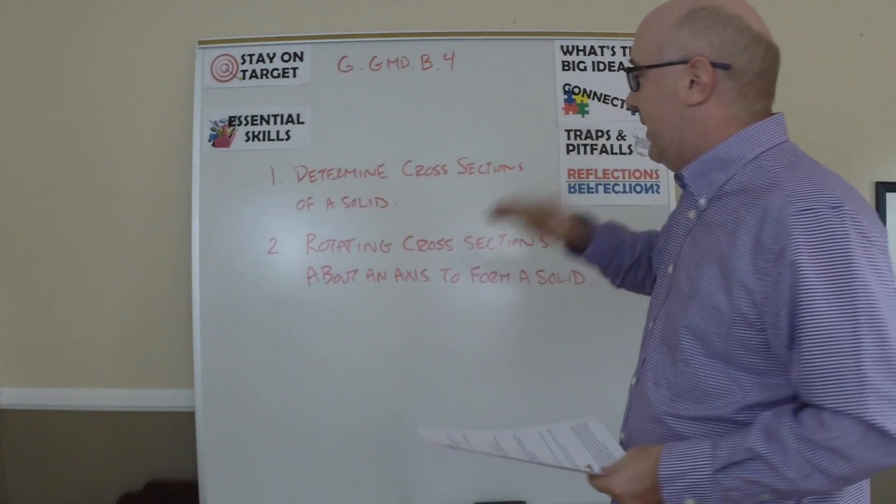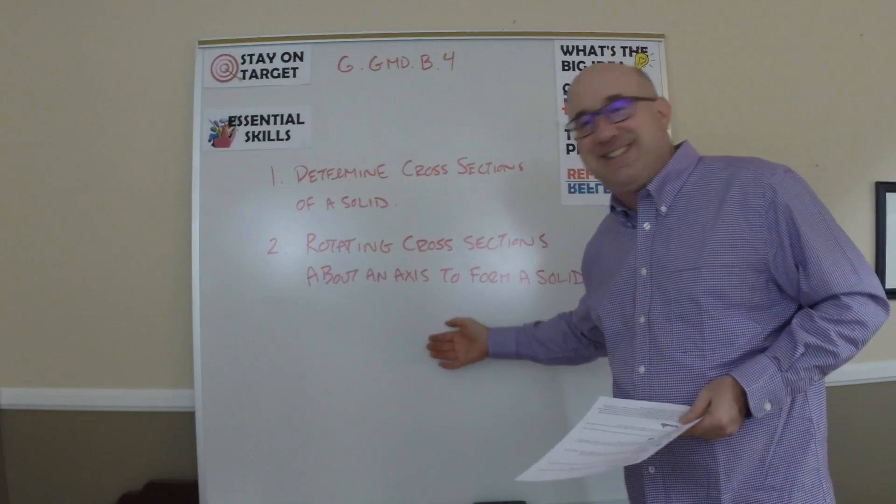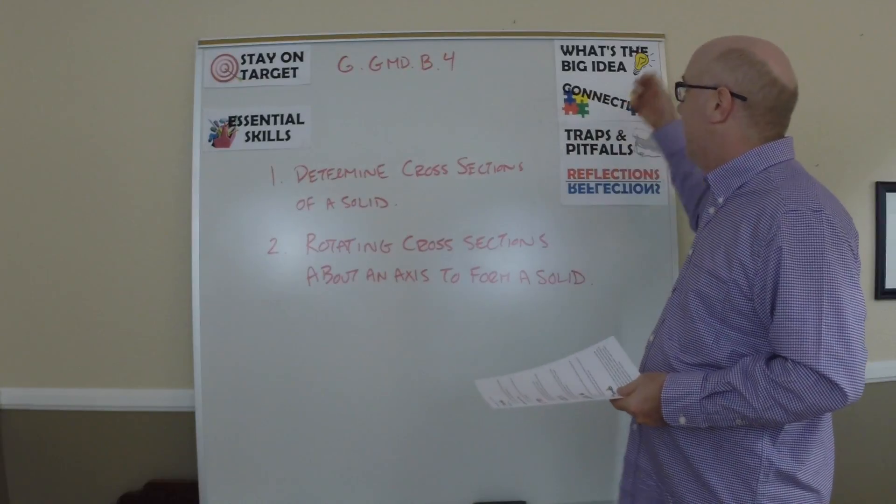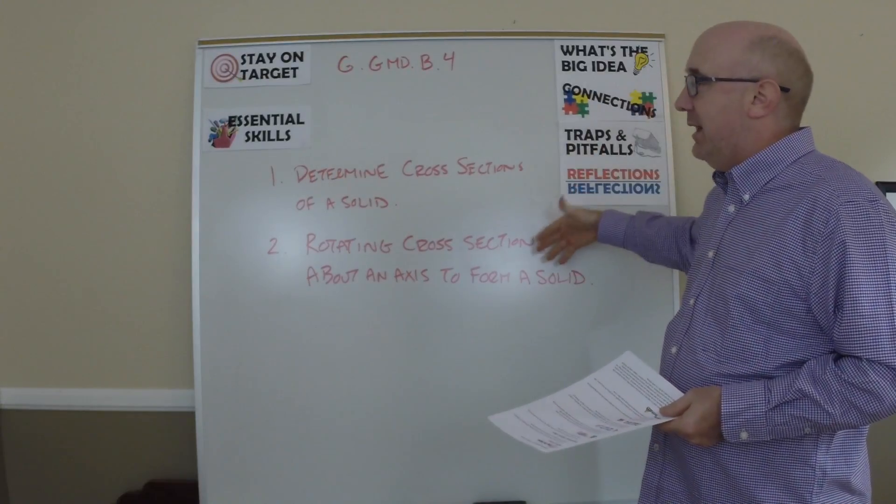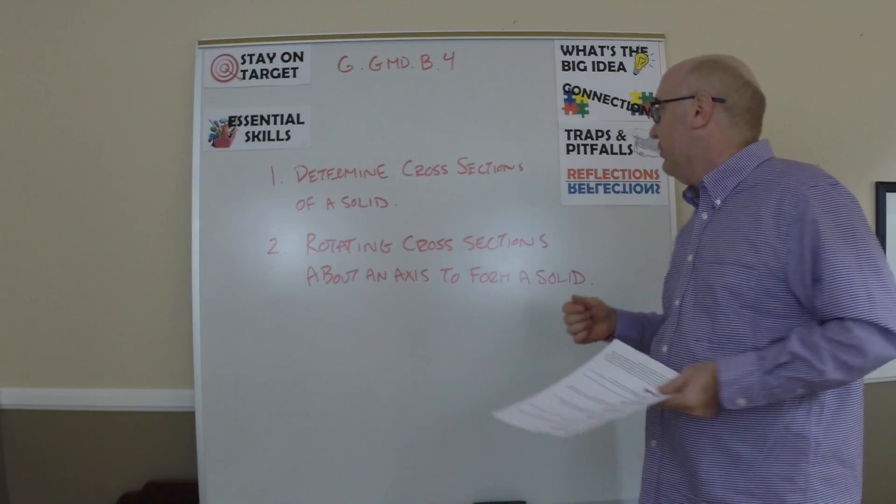So the big idea, of course, this leads us to volume. And certainly if we get to calculus, rotating things about an axis to create volume is a part of that. So that's a forward connection, backward connection, of course, is volume, that we've covered area, those kinds of things.